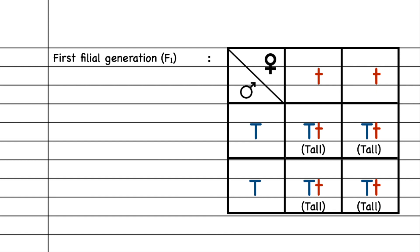Why is this so? If you observe the genotype — capital T and small t — capital T being the dominant one expresses over the recessive small t every time. So whenever there is a dominant capital T present, it will express over the recessive small t. From the Punnett square, all offspring are tall, and all have the same genotype: capital T and small t.